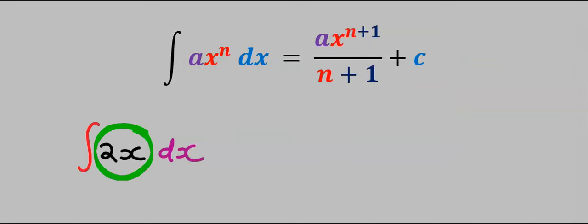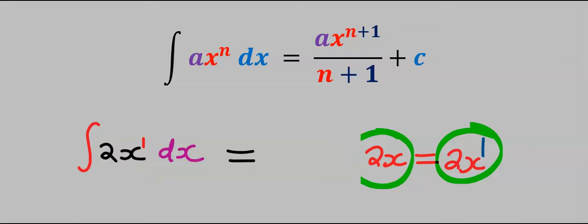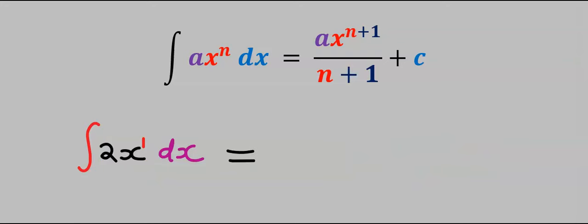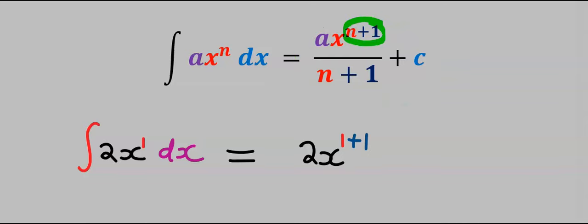In this function the power of x is 1, because 2x is the same as 2x to the power of 1. Next, let's integrate: according to the power rule, we are going to add 1 to the power, and that new power will come down to the denominator.